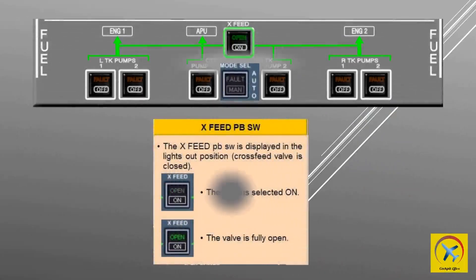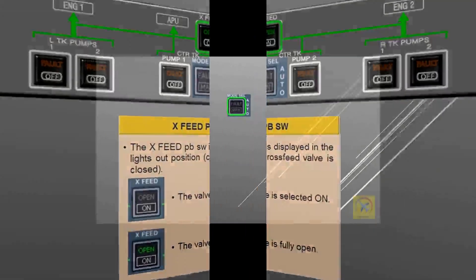The cross feed push button switch is displayed in the lights-out position, meaning the cross feed valve is closed. If the ON legend appears, the valve's push button switch is selected on. When the OPEN green sign illuminates, the valve is fully open.